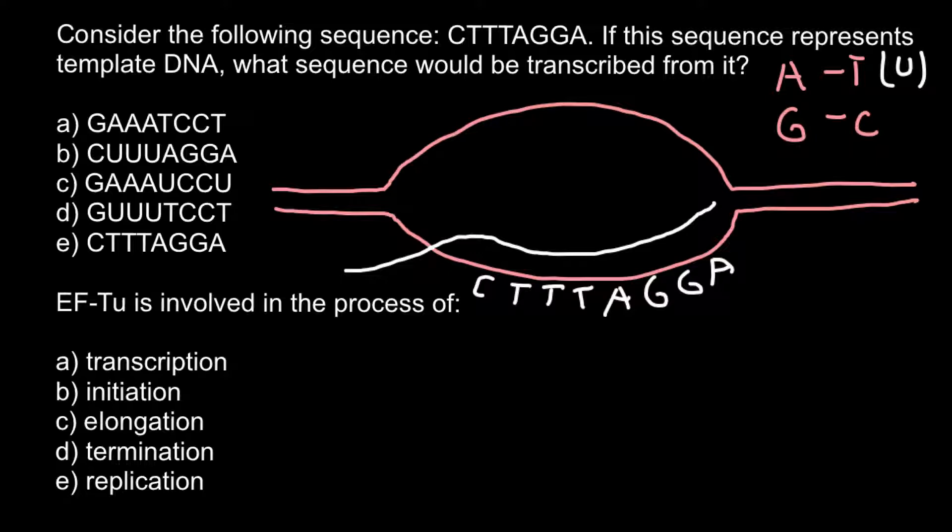Let's write the sequence of the messenger RNA. Cytosine would pair with guanine, thymine with adenine, and adenine would pair with uracil. Cytosine, cytosine, and uracil. Here we have the five prime end and three prime end. So our sequence is G, A, A, A, U, C, C, U.